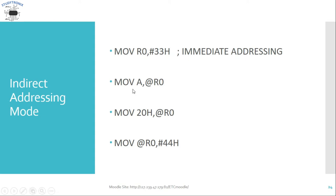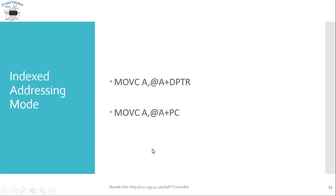Another indirect addressing mode example: MOV 20H, @R0, where 20H is the destination RAM location and @R0 points to the source memory location. The instruction MOV @R0, #44H has both the @ symbol and a hash symbol, but it is still indirect addressing mode — not immediate — because the pointer must first be initialized before this instruction can be used.